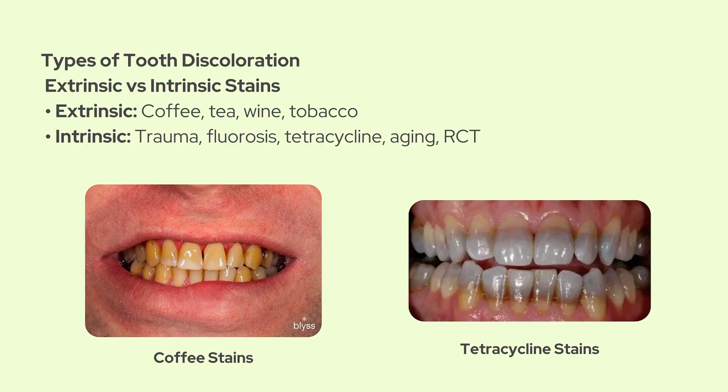On the other hand, intrinsic discoloration is deeper within the tooth structure itself. This can happen because of trauma, fluorosis, tetracycline staining, aging, or even previous root canal treatment. And for these cases, bleaching can get a bit more complicated.